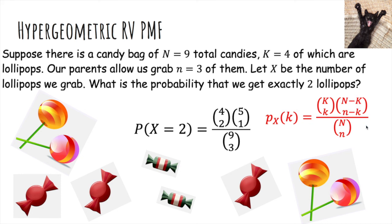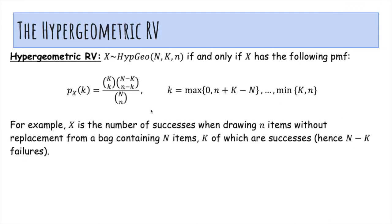So this is the hypergeometric random variable PMF. It's the number of successes when drawing little n items without replacement from a bag containing capital N items, K of which are successes, and hence capital N minus capital K failures.